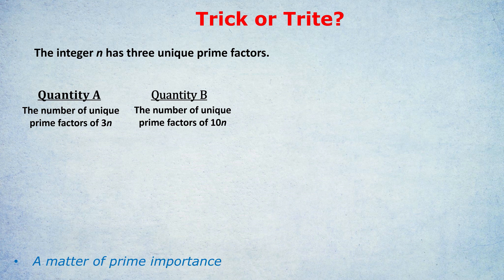So we have this integer n that has three unique prime factors. And what is bigger, the number of unique prime factors of 3n, or the number of unique prime factors of 10n?